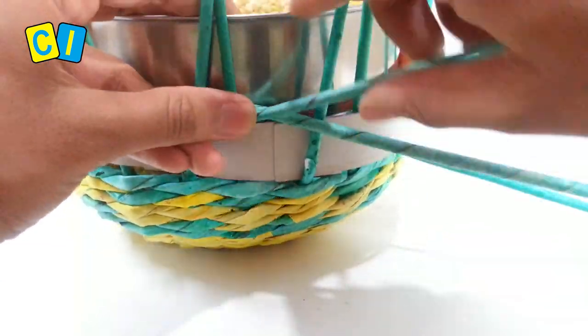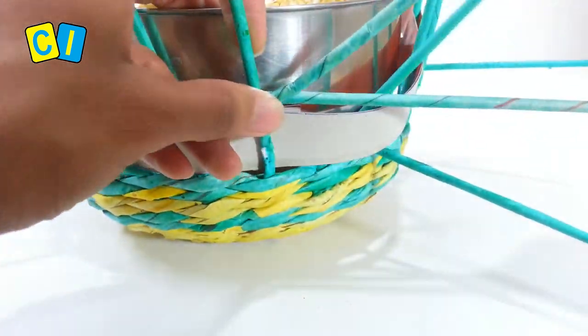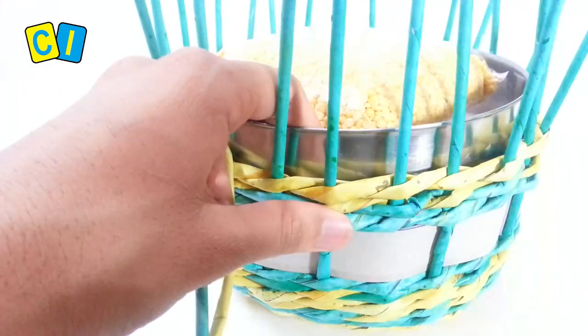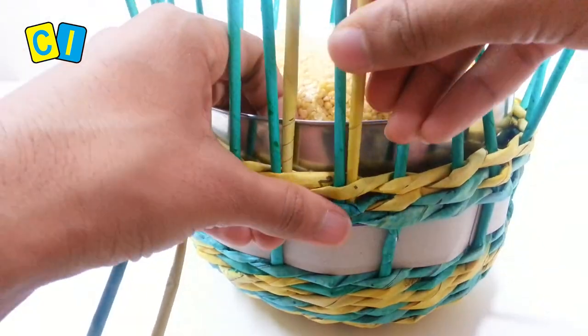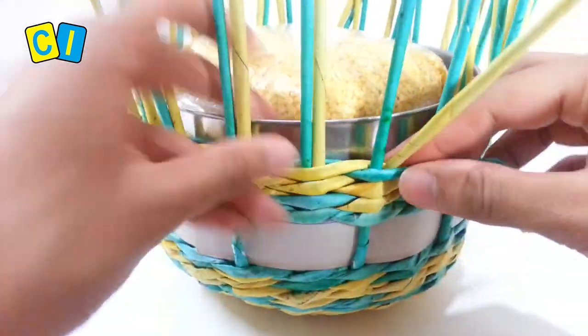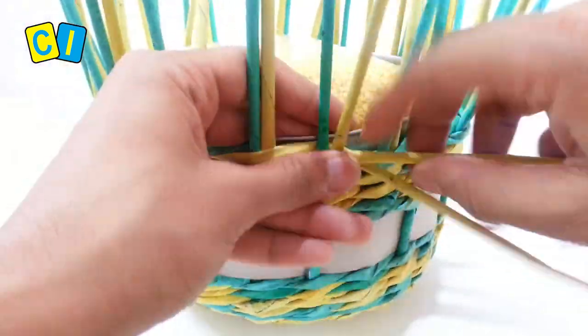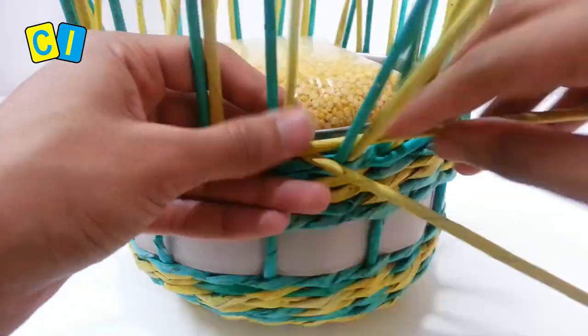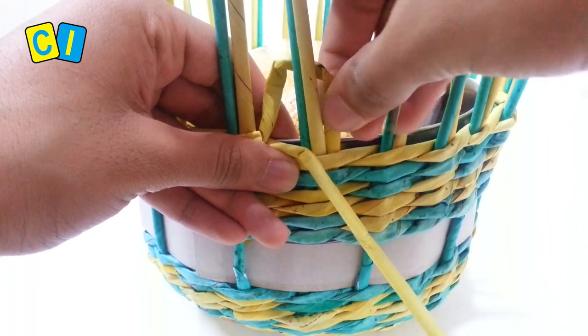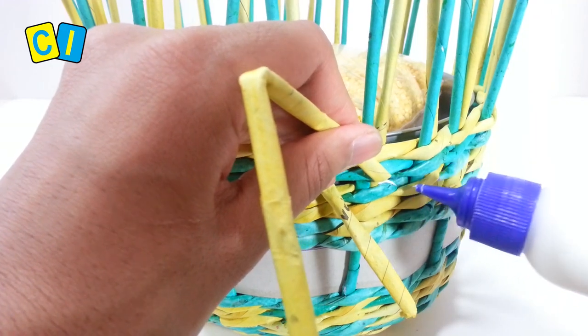After three rows, attach a yellow tube to the right of every pole. Change both tubes to yellow and continue weaving. Make space and insert the tubes inside. Apply glue and cut extra length.